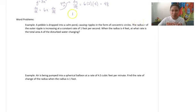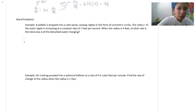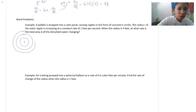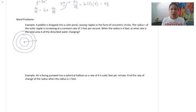Let's go through the problem and define what we know. Visualizing this: we've got a pebble dropped into a calm pond causing ripples in the form of concentric circles — circles that have the same center. Imagine dropping a pebble into a pond and it makes circles around it in the form of ripples. The radius r of the outer ripple, from the center to the outer circle, is increasing at a constant rate of 1 foot per second.